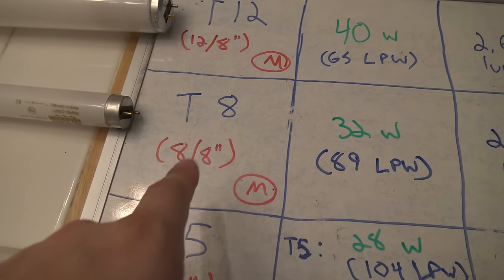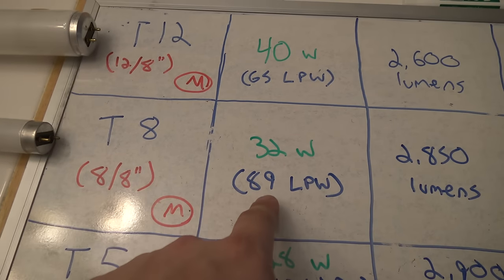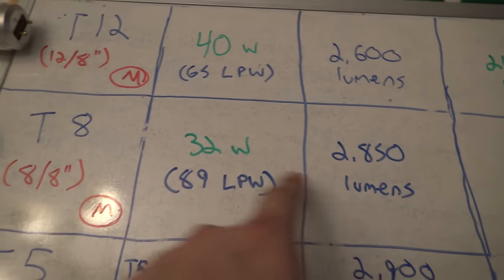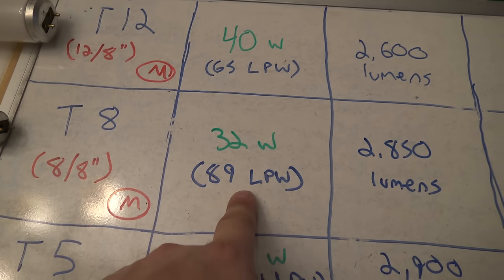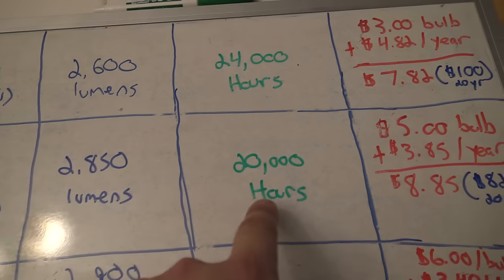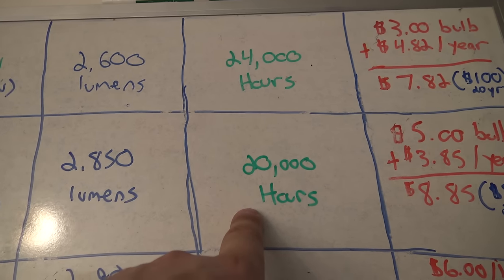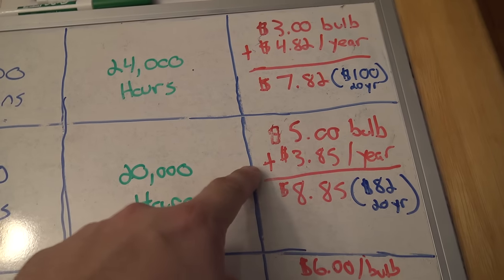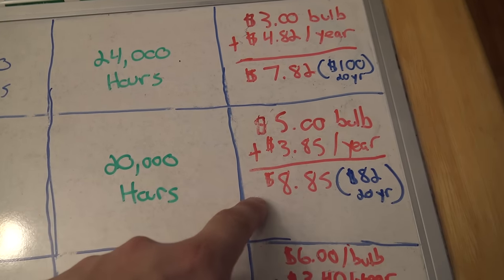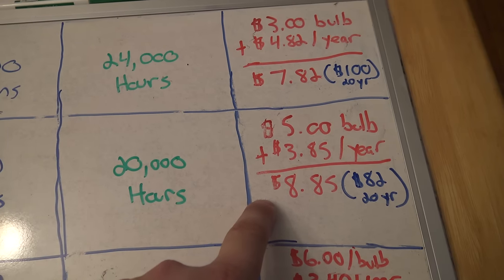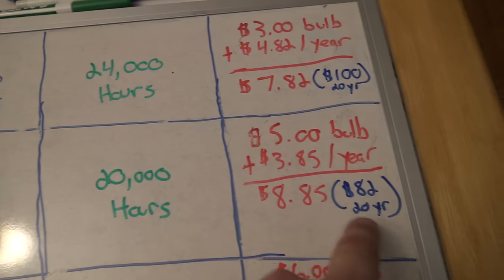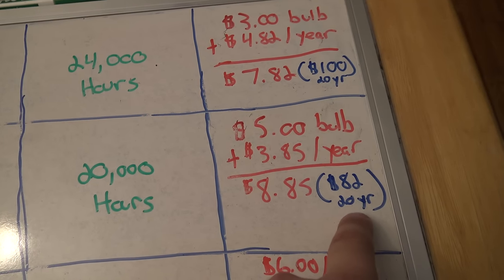Now, that assumes a 3-hour-per-day use at 11 cents per kilowatt hour. Comparing that to the T8, obviously we've got a drop in wattage. We also have an increase in lumens. That means we have an increase in lumens per watts, which is a good thing. The number of hours actually goes down a little bit. The cost of the bulb is more expensive, but it costs less to run it. Overall, it's a little bit more expensive in the short term over the T12, but over the long term you save money.